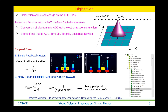Once we have the fired pads and charge, for the simplest case of a single fired pad we assign the center position of the pad as the hit position, with resolution approximately pitch/√12, which is pad size/√12. For multiple fired pads we use the charge center-of-gravity, using the charge information on each pad to reconstruct the track position. In this case we get a good improvement because we are really reconstructing the position of the track.